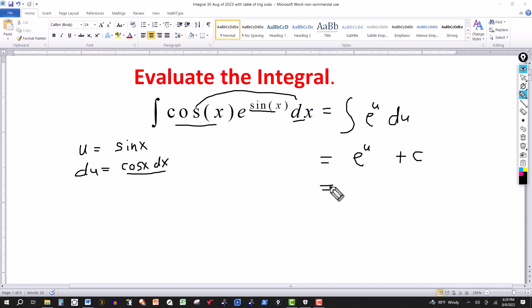And then once we're finished with the integration, all we have to do now is go back to the original variable. So this would be e to the u, and u is sine of x, plus the constant of integration.